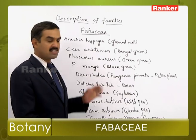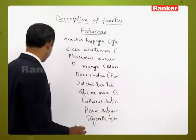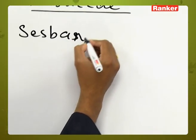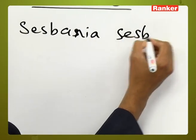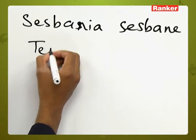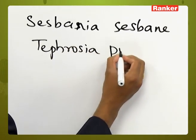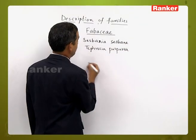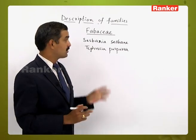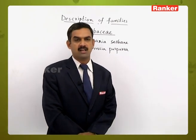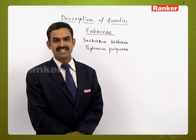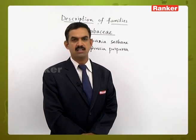Let us also name some of the other members. Sesbania sesban, Tephrosia purpurea — these are some other members which have important uses. Now let us come to the other characters, starting with the vegetative characters and the floral characters, ending with the economic importance of the Fabaceae family members.